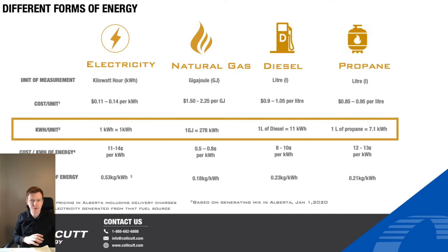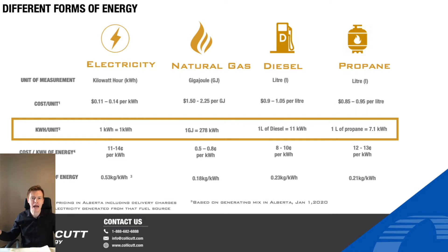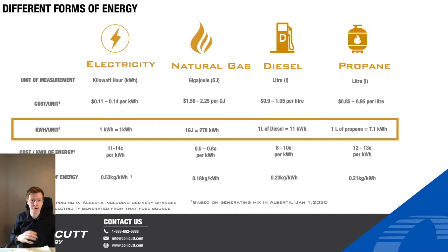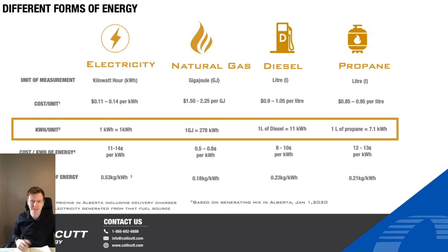What we've done — if you look at the third line down — is we've normalized all the standard units of measurement and compared them back to kilowatt hours, so we're comparing apples to apples. One gigajoule of gas, which is equal to about 1 mm BTU of gas or an MCF of gas, is equal to about 278 kilowatt hours of energy. One liter of diesel is equal to about 11 kilowatt hours, and a liter of propane is equal to about 7.1 kilowatt hours of energy.